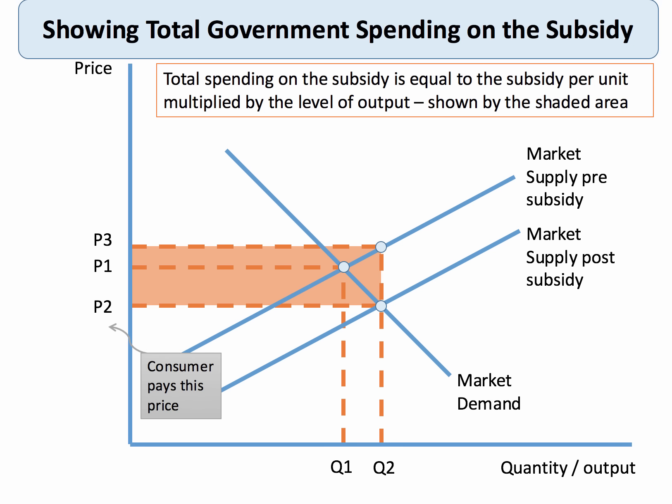It's important in the exam to label and annotate fully to help the examiner and earn full marks. The consumer pays price P2 — benefiting from the lower price — while the producer receives P3, which is the market price P2 plus the subsidy. This diagram shows the total government spending on the subsidy.